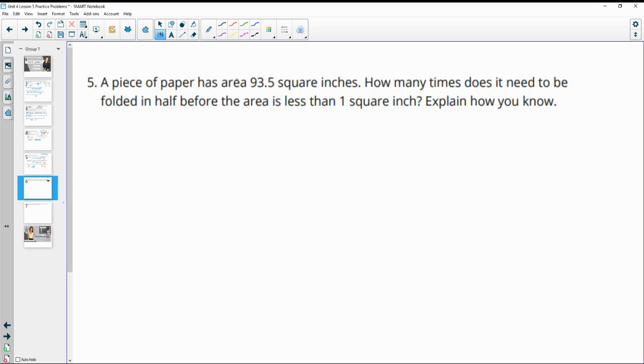Number 5, a piece of paper has an area of 93.5 square inches. How many times does it need to be folded in half before the area is less than a square inch? So there's a couple different ways you could do this.